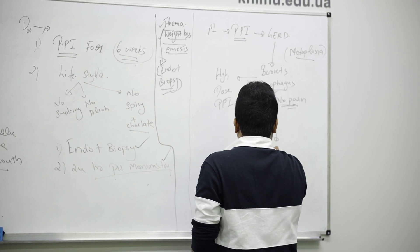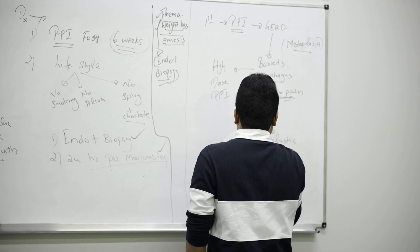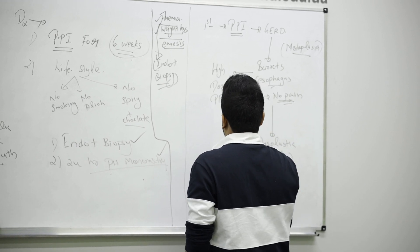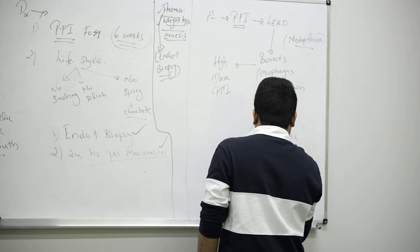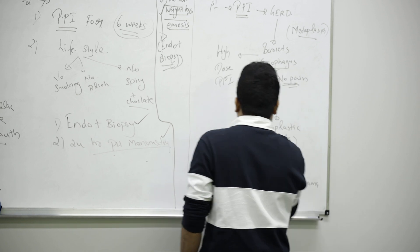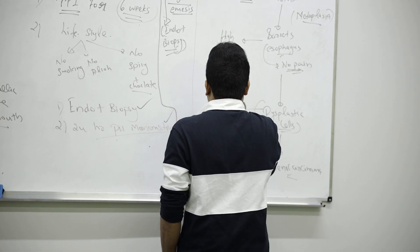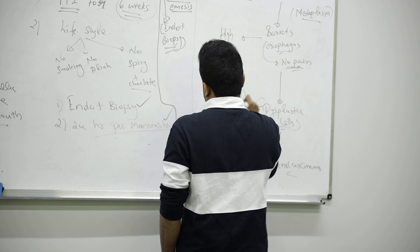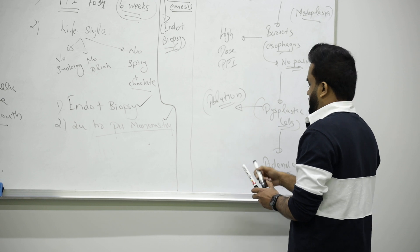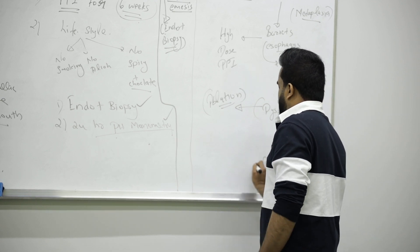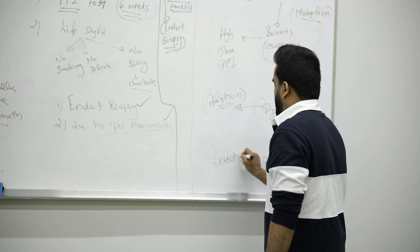Gradually it can become dysplastic cells - if you start finding dysplastic cells, that's the starting of cancer. Gradually it can become even adenocarcinoma. If it's dysplastic cells, go for ablation: radioactive ablation or ionizing radiation. For adenocarcinoma, you completely do resection.